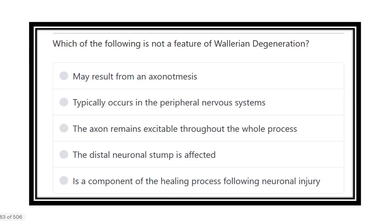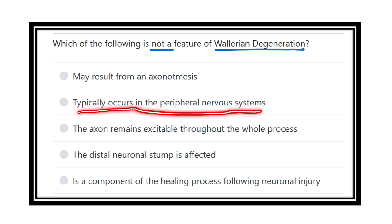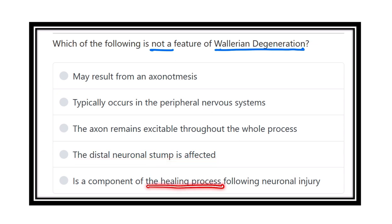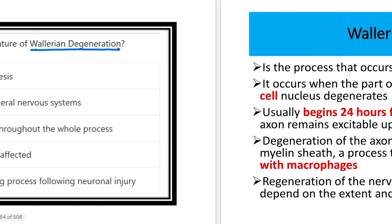Which of the following is not a feature of Wallerian degeneration? The options are: may result from axonotmesis, typically occurs in peripheral nervous system, the axon remains excitable throughout the whole process, distal neuronal system is affected, and it is a component of the healing process following neural injury. We need to know the details about Wallerian degeneration.